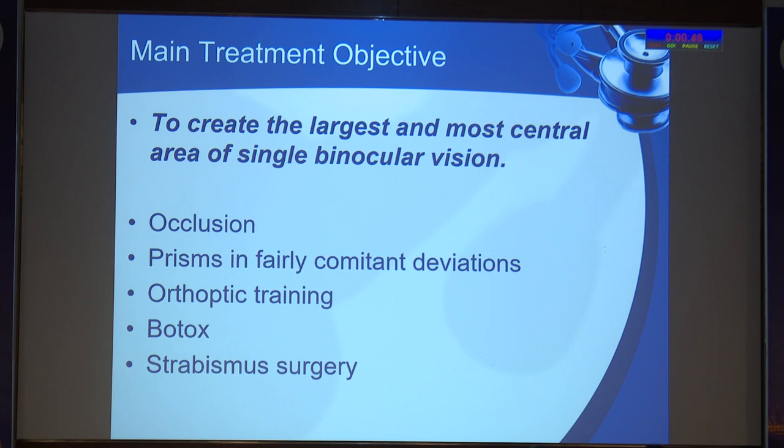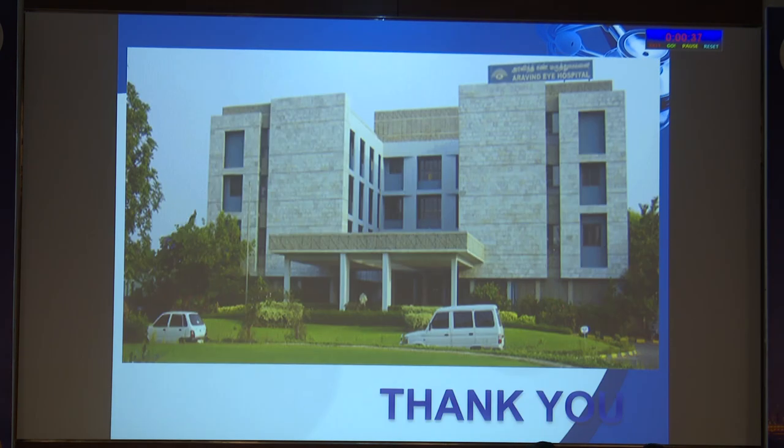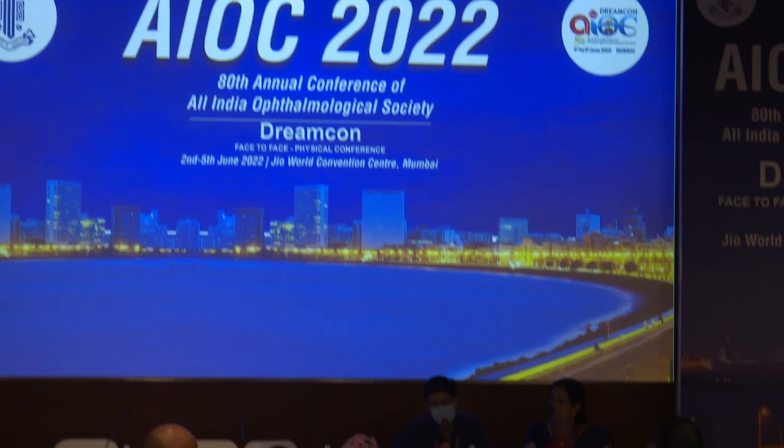The objective of diplopia management is to maximize and make most central the single binocular vision. Modalities include occlusion, prisms — if there is a fairly comitant deviation, prisms can be tried — orthoptic exercises, and Botox. Surgery, especially in these last few months to a year, may be required for stable deviations.